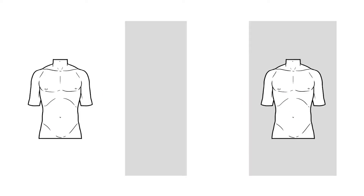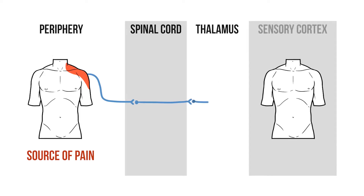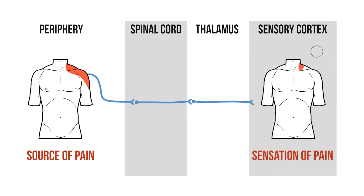Before talking about referred pain, we need to look at how regular pain works. Normally, pain in the body travels to the spinal cord via a first order neuron. From here, a second order neuron relays signals to the thalamus, before a third order neuron enters the sensory cortex of the brain. At this point, the brain relates that signal to a map of the body and establishes that pain in the neck is, well, a pain in the neck.